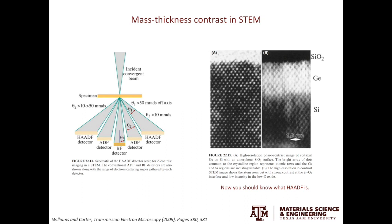Let's look at an example from the textbook. On the left is a high-resolution image of epitaxial germanium on silicon. Because silicon and germanium have the same crystal structure — both are diamond cubic — you cannot tell them apart. However, in the HAADF image, because germanium has higher Z, it will appear brighter compared to silicon.